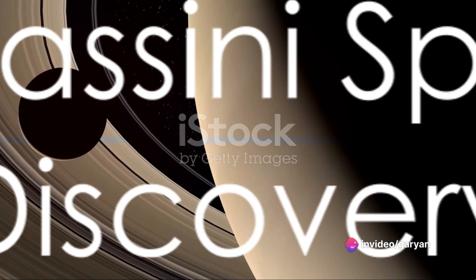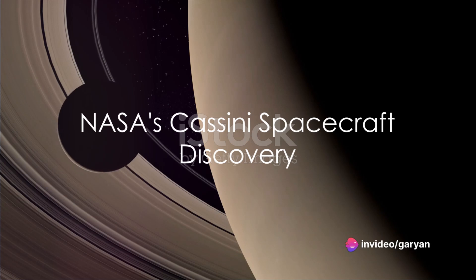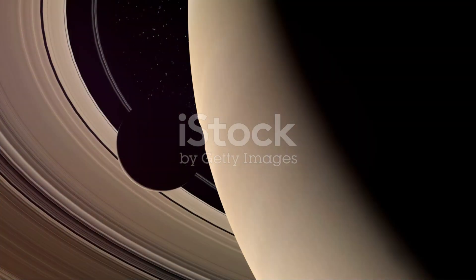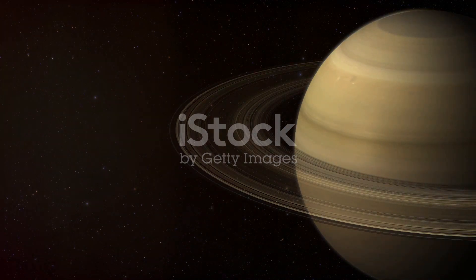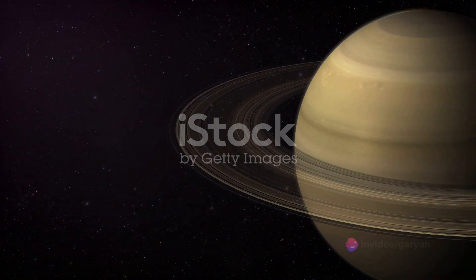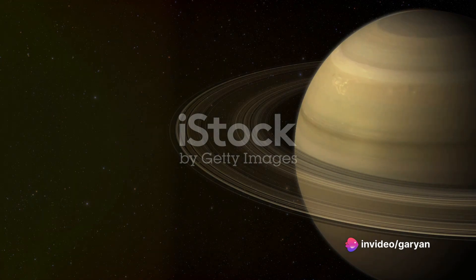This remarkable discovery was credited to NASA's Cassini spacecraft. Orbiting the planet, Cassini detected shadows cast upon the rings. These shadows hinted at substantial elevations, which were later identified as the enigmatic Saturn B-ring peaks.